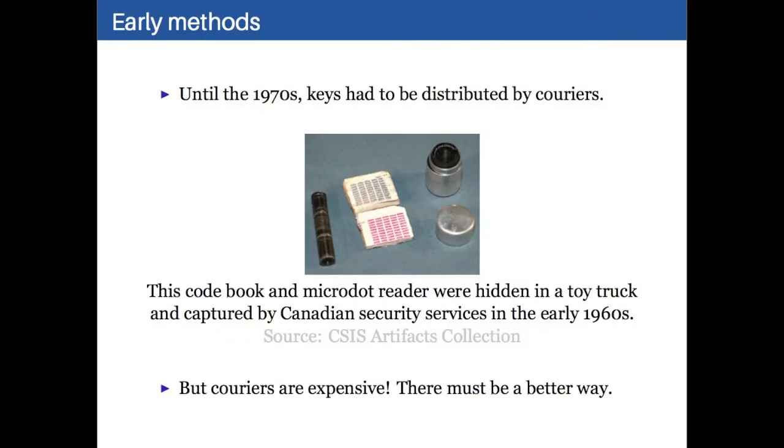So the really old-fashioned way was to use couriers. This is an example of one that was used by the KGB that was captured by the Canadians in the early 60s. They had their little book with tiny letters and numbers printed on it that they would then use for their codes. And so that also had a micro dot reader, so it shows you the level of technology involved in some of this stuff. But that was very secure, and almost impossible to break. But couriers are really expensive and time-consuming, and they get captured, and there are all sorts of other problems. So there has to be a better way, and maybe we could use maths and engineering to solve this problem.